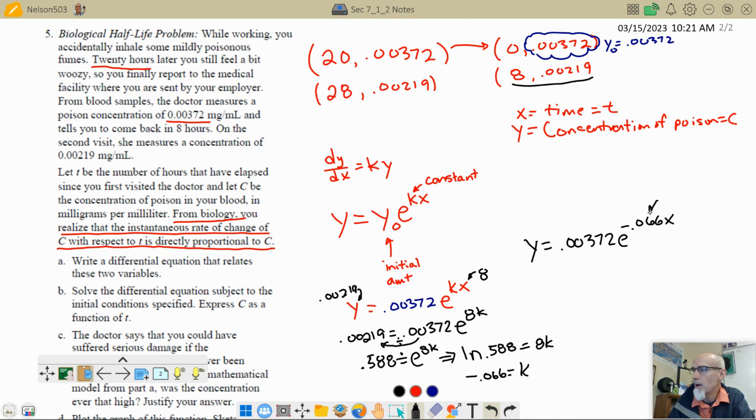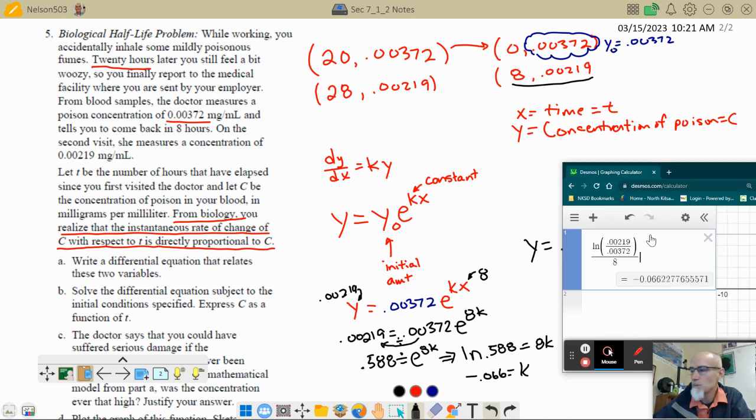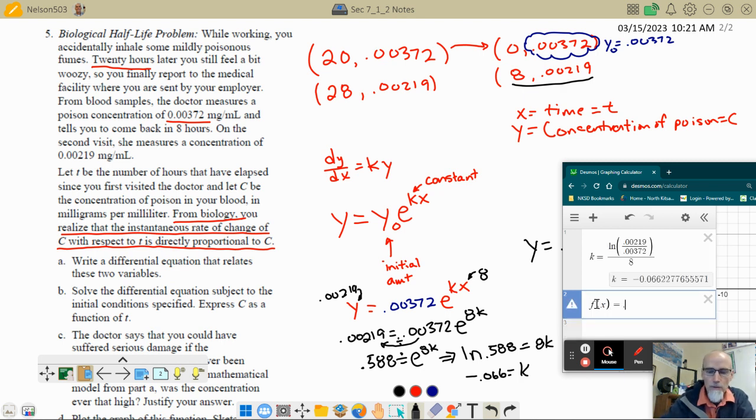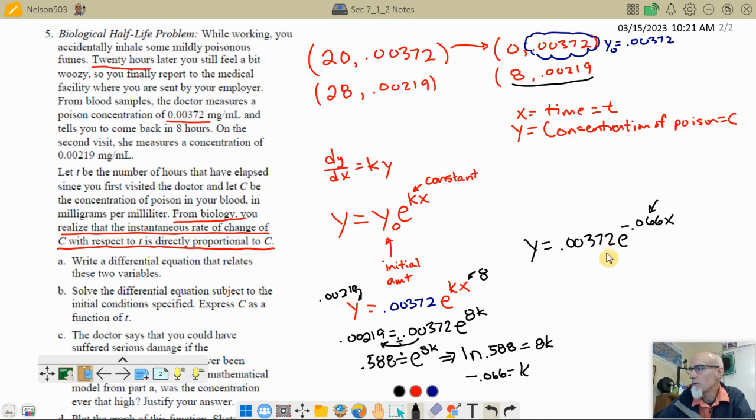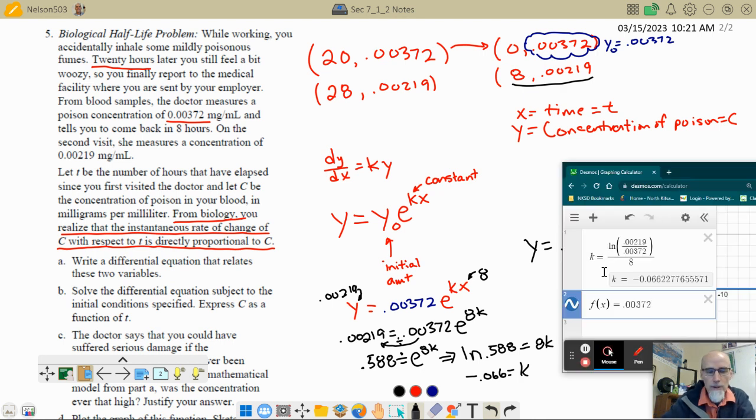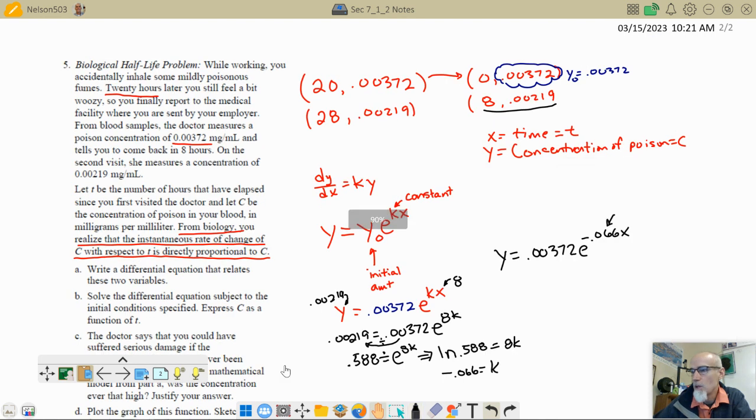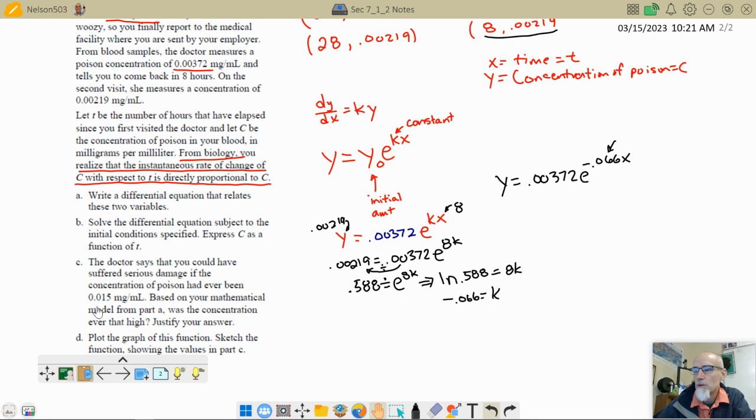Now, again, I would like to use as accurate as possible on Desmos, so I could call this thing right here, I could call it k, k equals, and now that will allow me to come up with an equation like f of x equals 0.00, what was it again, 372, 372 e to the kx, and now it's taking the k value and it's putting it right down here. So right down here where it says, you know, you could have suffered serious damage if the concentration level was 0.015 based on the mathematical model of part A, was the concentration ever that high?